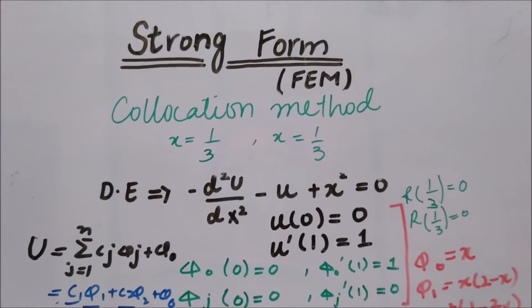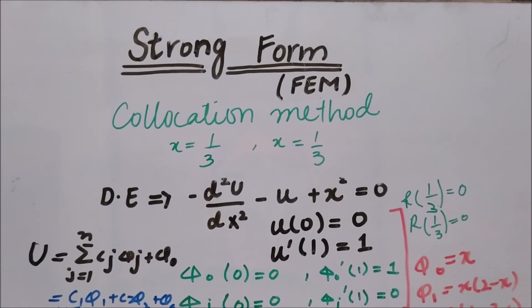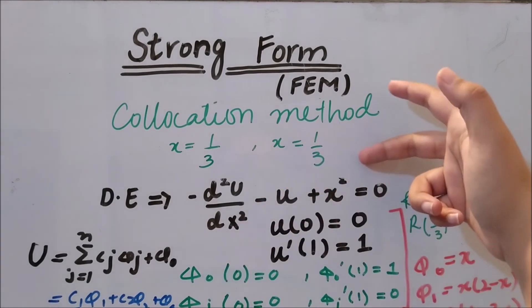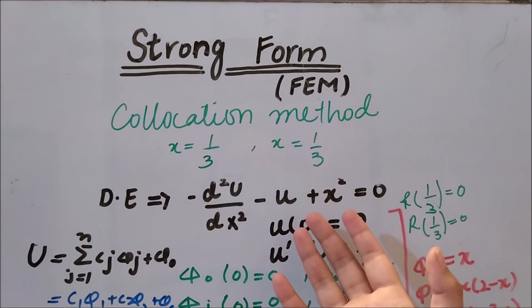Whenever you have a differential equation with certain conditions and you have options to select a certain method while solving under the strong form or under the weighted residual form, you have to consider all these methods and see which method has less residual in your case, has less error of the approximated U with respect to the actual U you have in this problem or the problem you have.